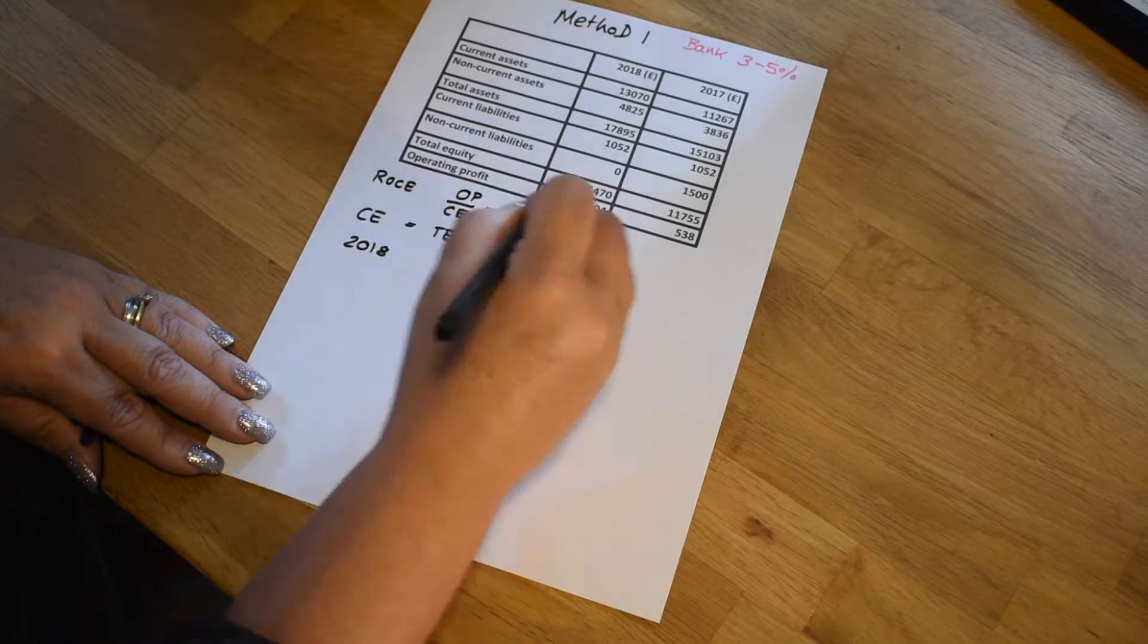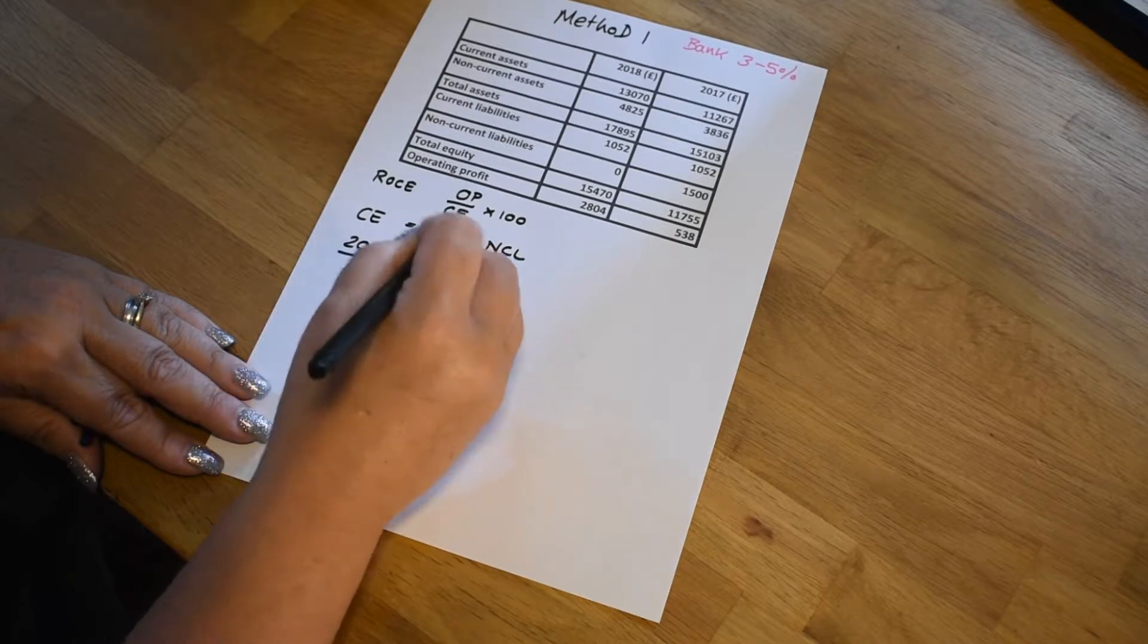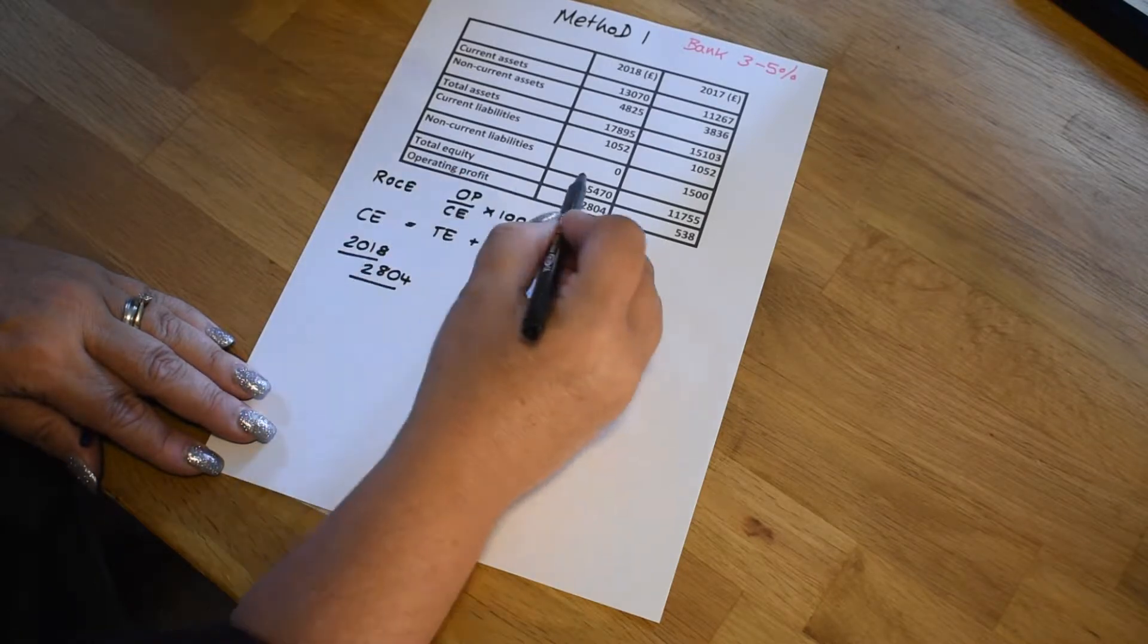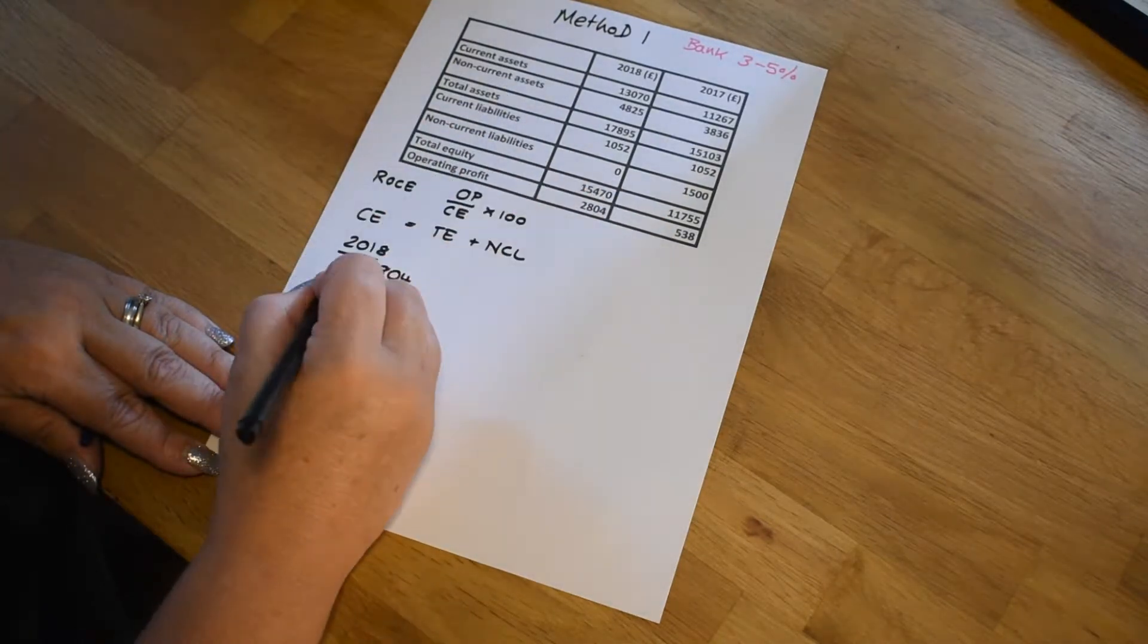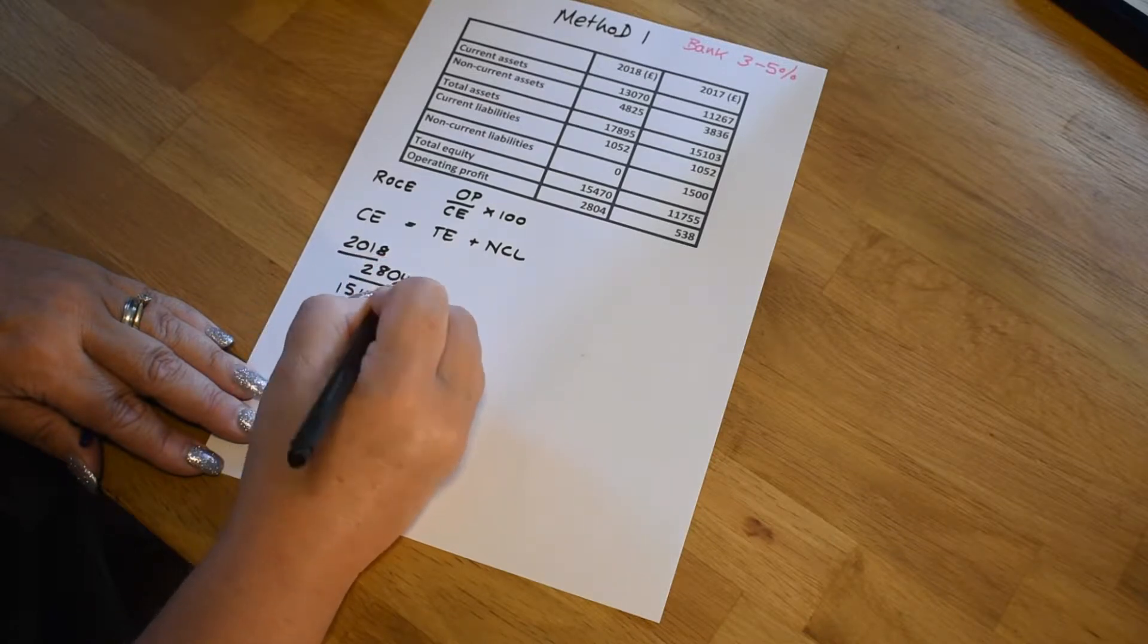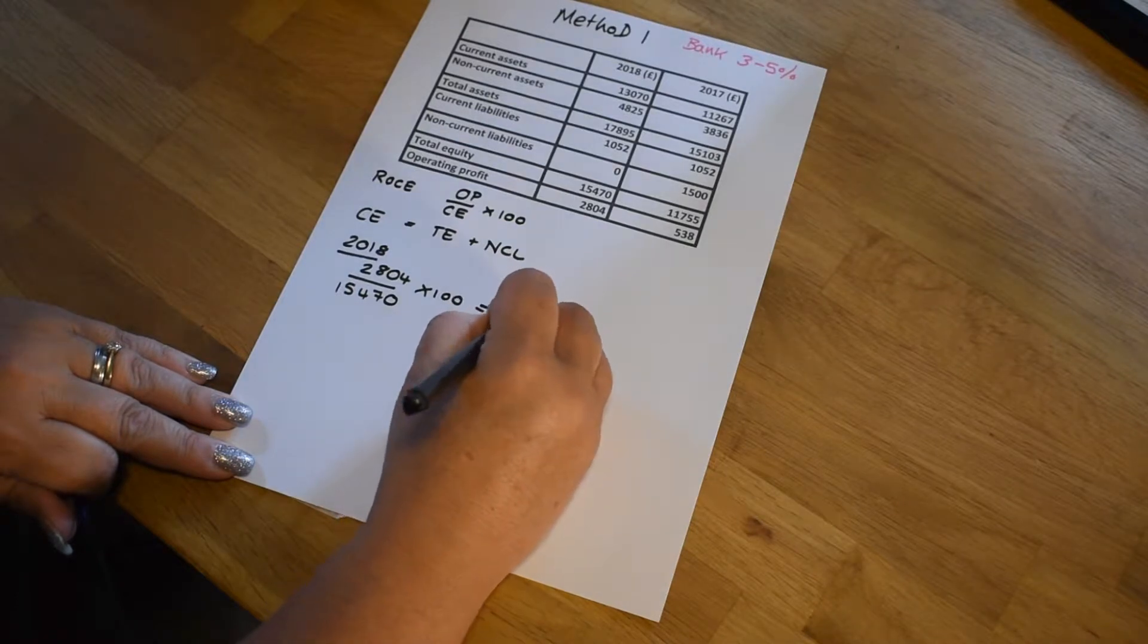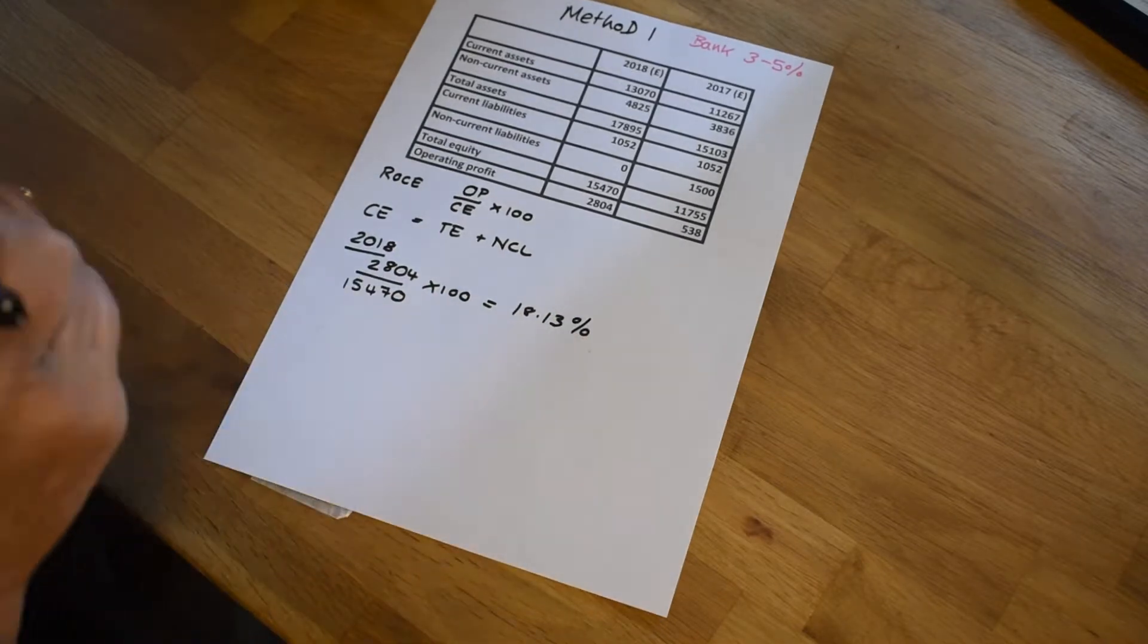And we know that our operating profit is 2804, and we need to put that over the capital employed figure. Now for this particular example, we're going to have a look at the total equity. It's that figure there. And there are no current liabilities, so it's quite straightforward. We're going to put 15,470 into that and multiply all of that by 100 using our formula, which will give us 18.13% rounded up to two decimal places.